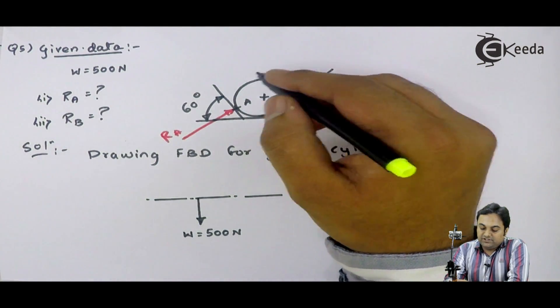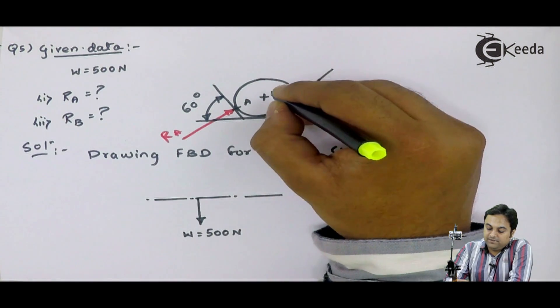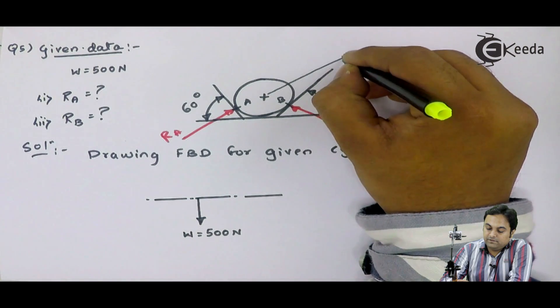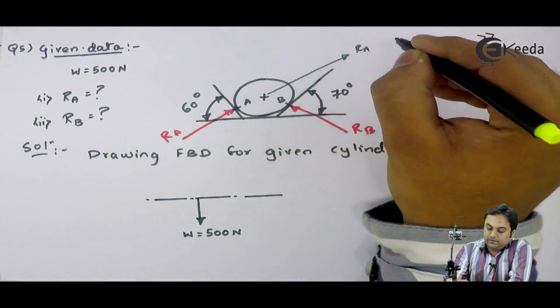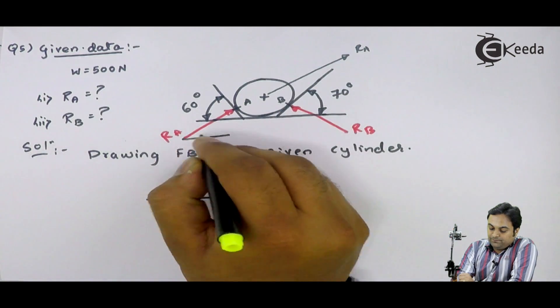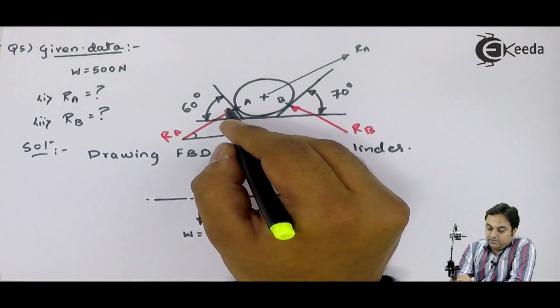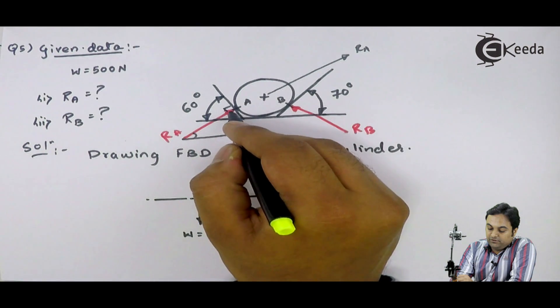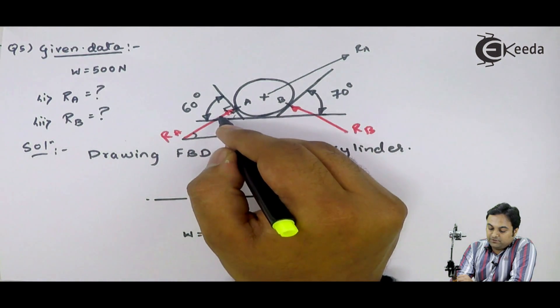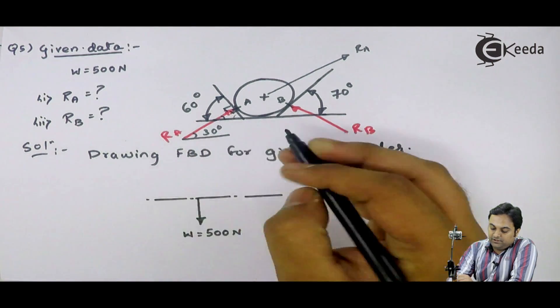That is, if we extend RA, RA will be somewhere here. Reaction at A. I need to know the inclination of RA with horizontal. Here I have RA is perpendicular to the surface, so 90. This angle is 60. With respect to horizontal, the angle becomes 30 degree.